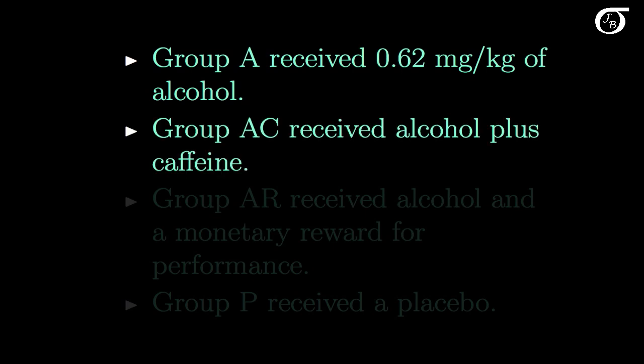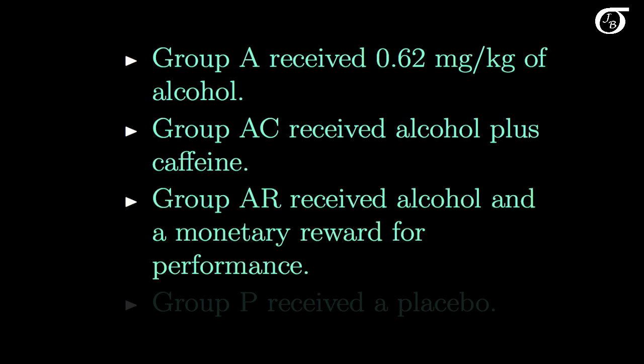Group AC received the same amount of alcohol plus some caffeine. Group AR received the alcohol and a monetary reward for performance on the task. Group P received a placebo. The drink was misted with alcohol to make it smell like alcohol, but it had negligible alcohol content.